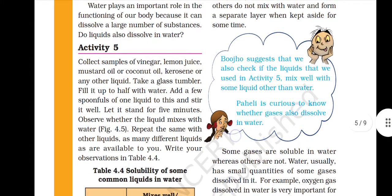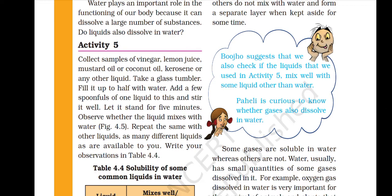Let's look at Activity 5. Collect samples of vinegar, lemon juice, mustard oil or coconut oil, and kerosene or any other liquid. Take a glass tumbler, fill it half with water, add a few spoons of one liquid to it, stir it well, and let it stand for 5 minutes. Observe whether the liquid mixes with water — like we did with solids such as sugar, salt, sand, and chalk.